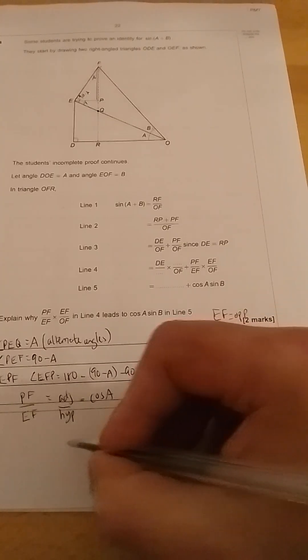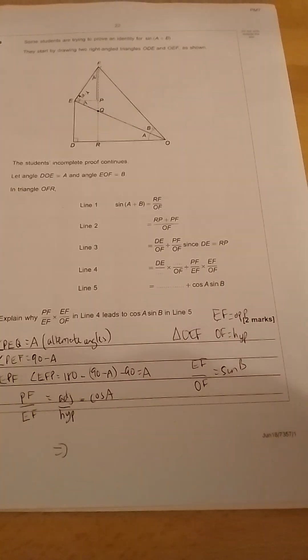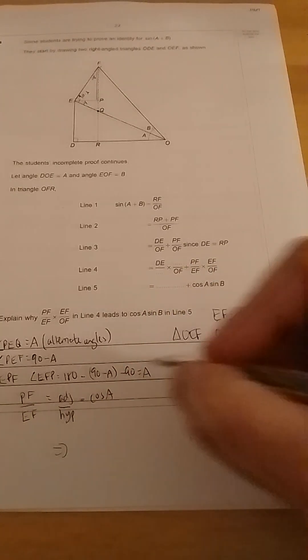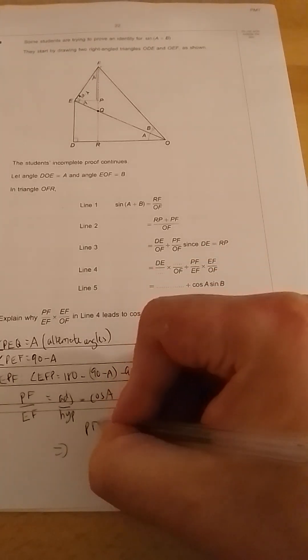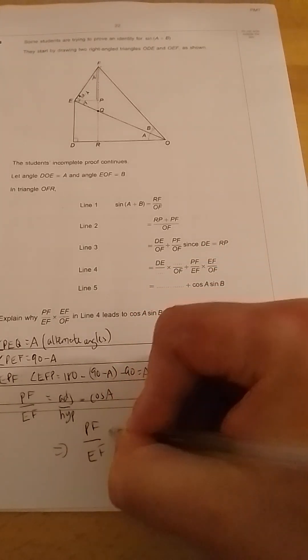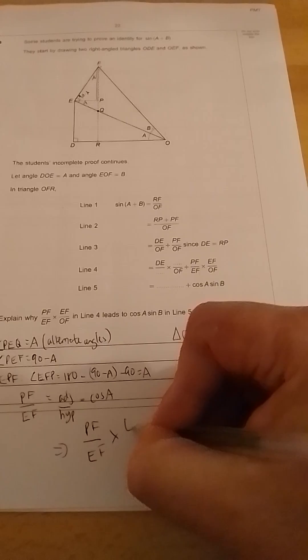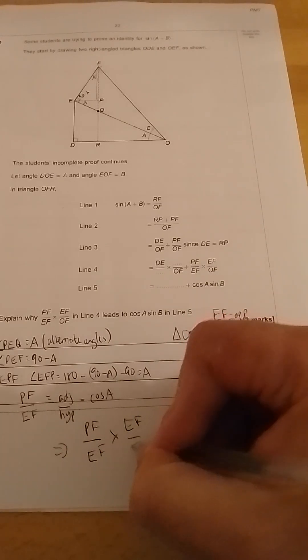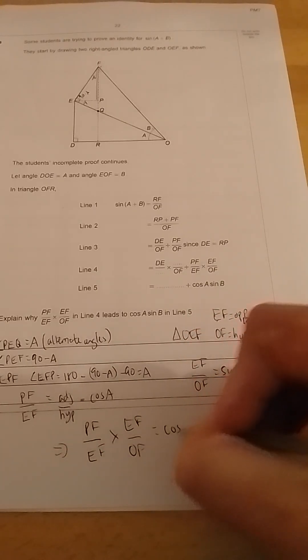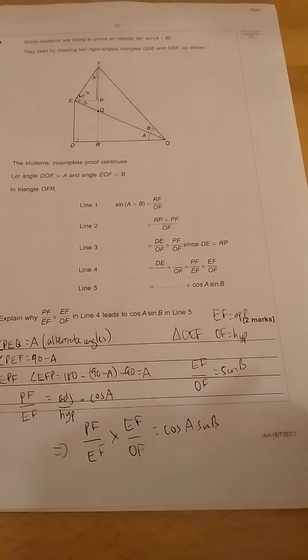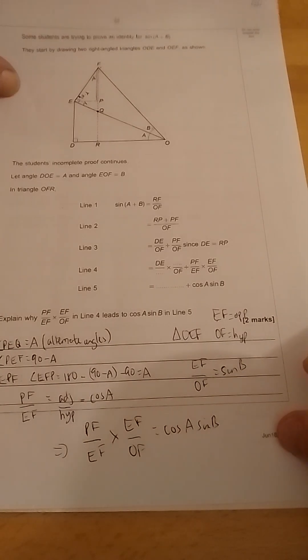So hence, obviously you could write this on the next page, but I'm putting it on so you can see it all on one page. PF over EF times EF over OF is equal to cos A sin B. The next part of the question is over the page.